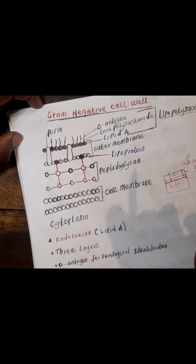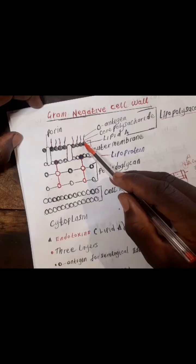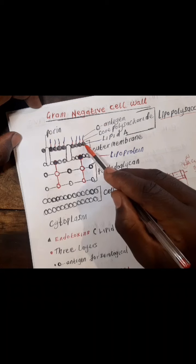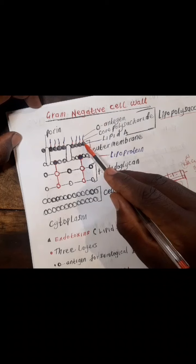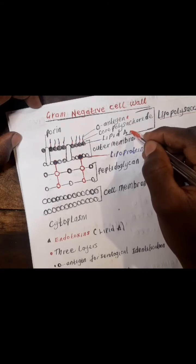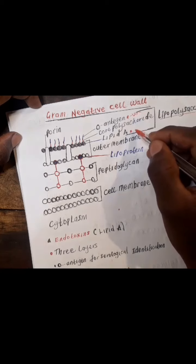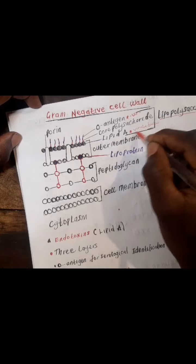The lipopolysaccharide contains three molecules: the O-antigen, the core polysaccharide, and also lipid A. Lipid A attaches the lipopolysaccharide to the outer membrane. Attached directly to lipid A is the core polysaccharide, and attached to the core polysaccharide is the O-antigen. The O-antigen and lipid A are virulence factors that cause infection in humans.